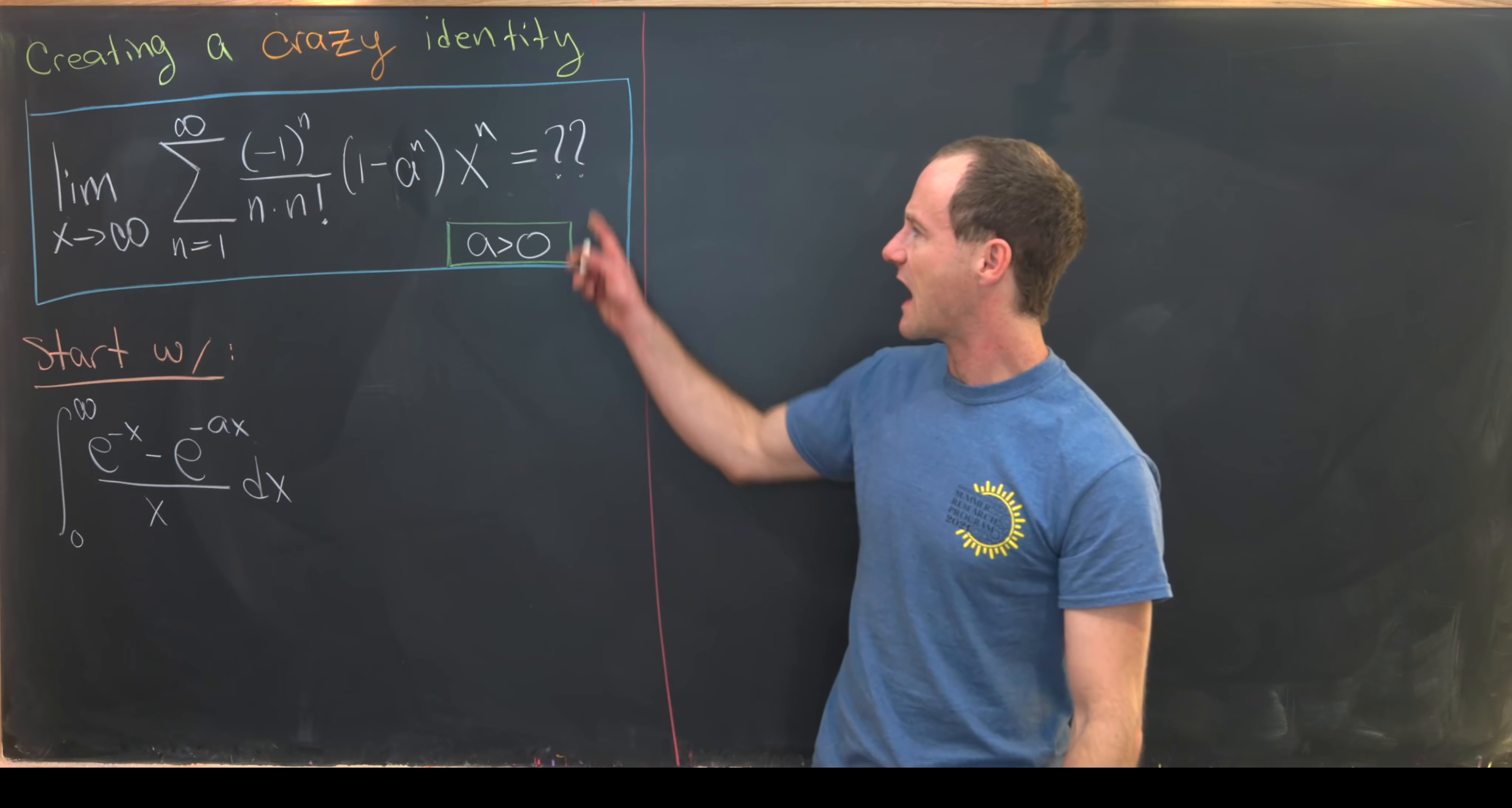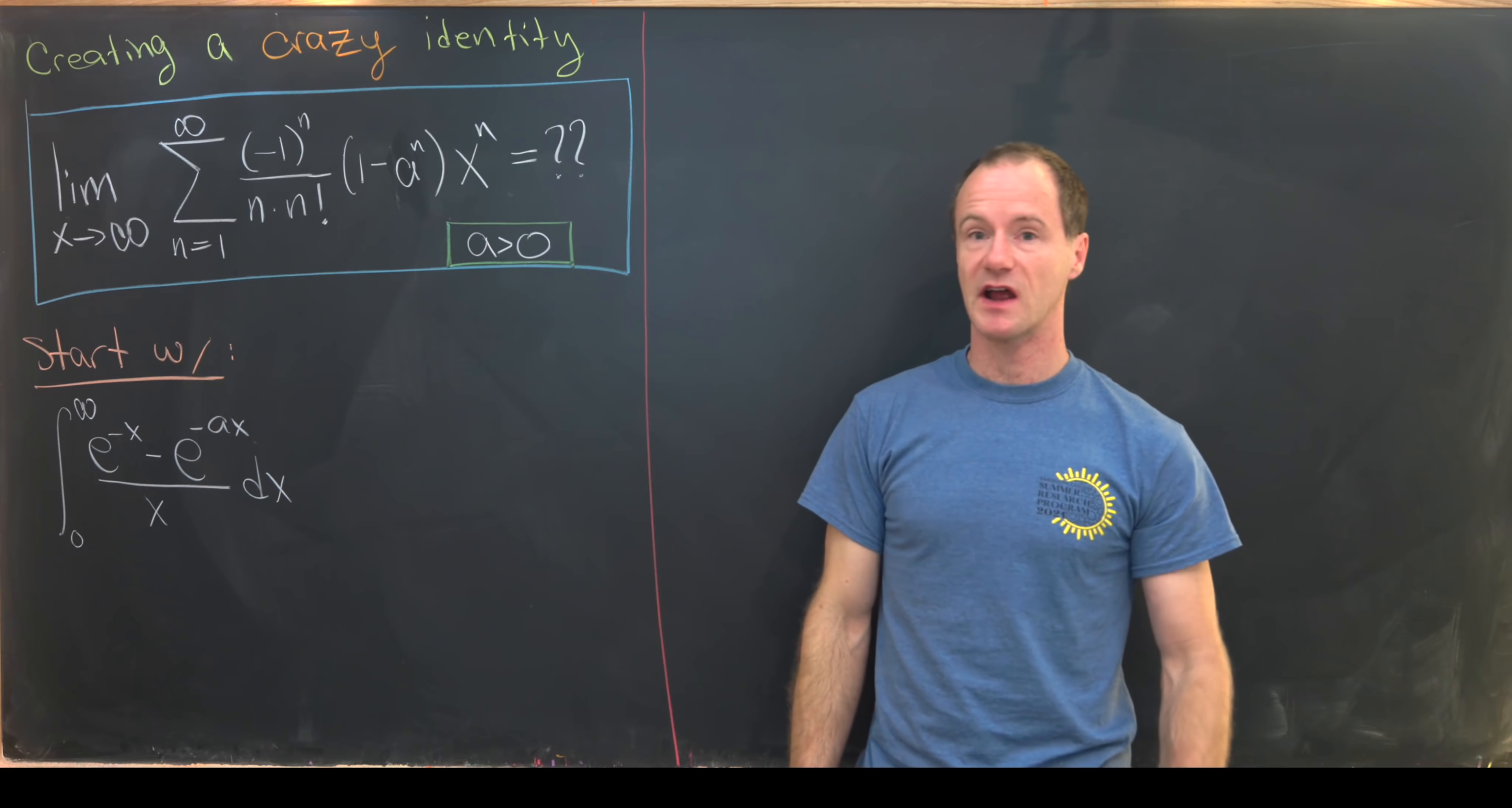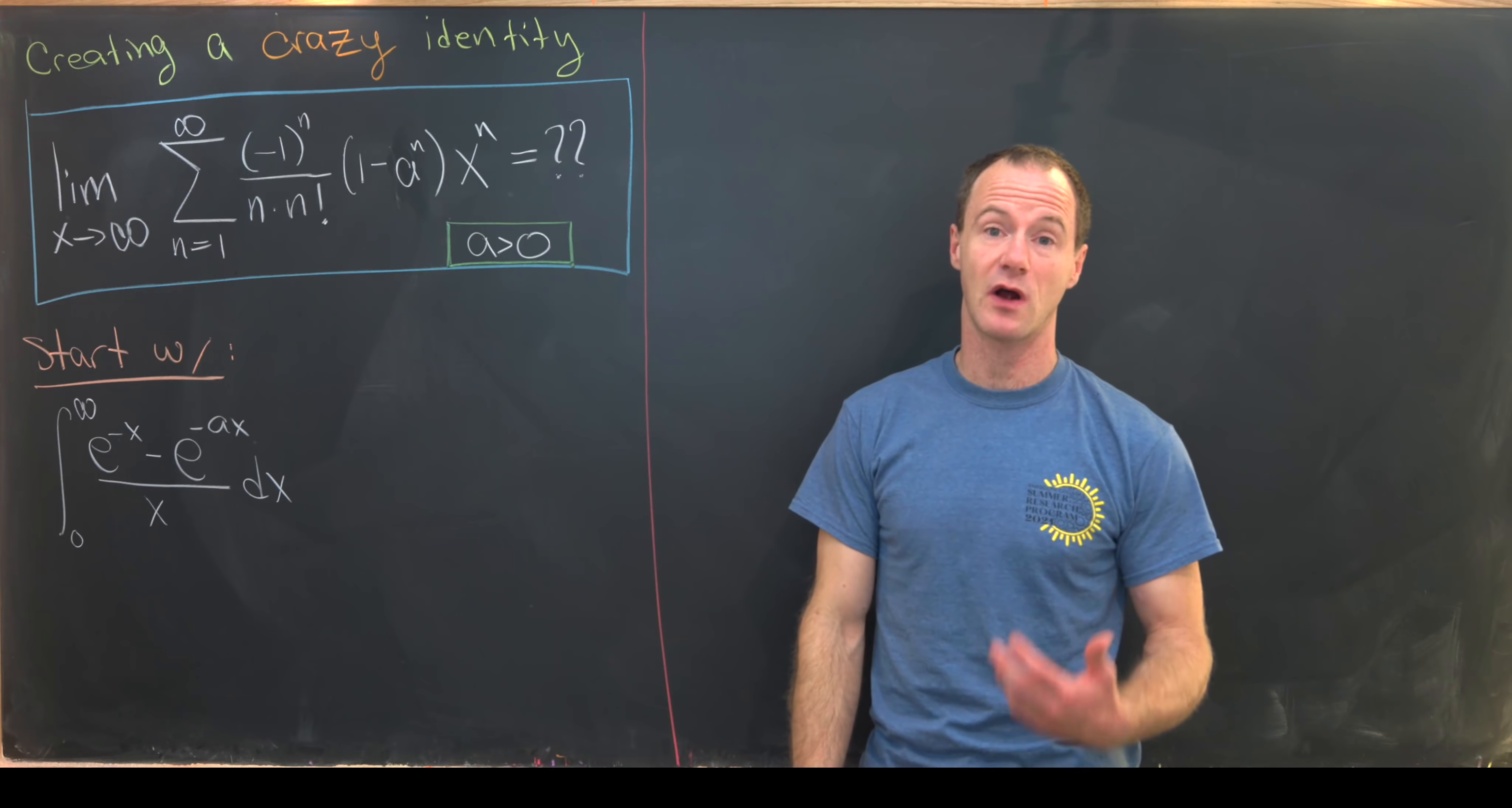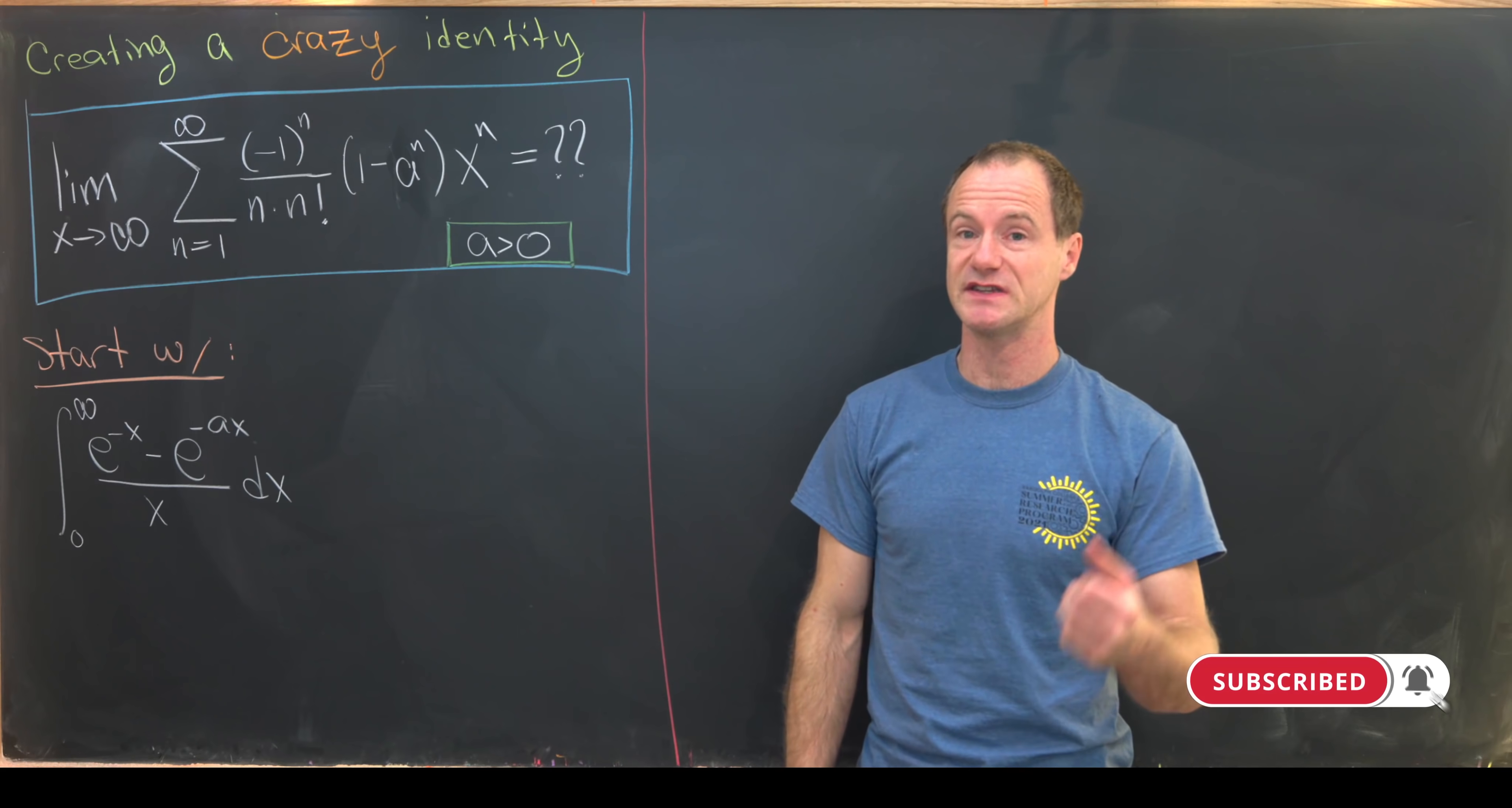I want to point out everywhere in our setup today a will be a positive real number. If you look at the individual parts of this integral like e to the minus x over x and e to the minus ax over x, you'll notice that those are non-elementary functions. In other words, they do not have closed anti-derivatives. So finding a closed form for this integral is probably going to require a trick.